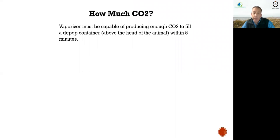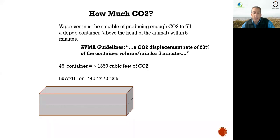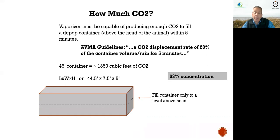How much CO2 do we need? We know we've got to fill a depop container above the head of the animal within five minutes, because we're following the American Veterinary Medical Association guidelines. We must have a CO2 displacement rate of 20% per minute for five minutes. When we do the math, a 45-foot container requires about 1,350 cubic feet of CO2. We only fill the container to a level above the head of the animal, but we must achieve a 63% concentration to ensure humane euthanasia.